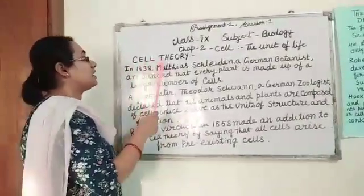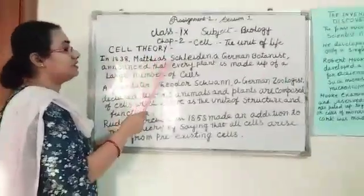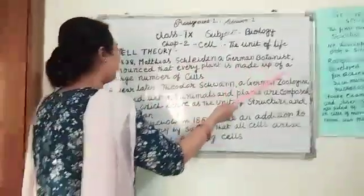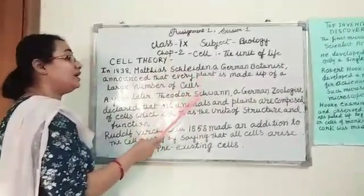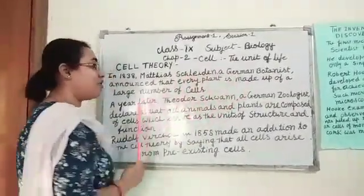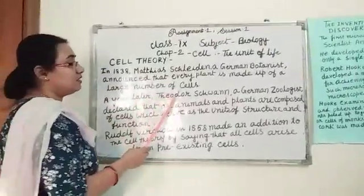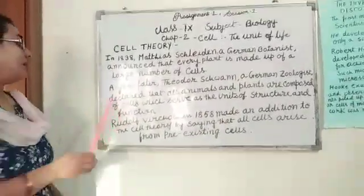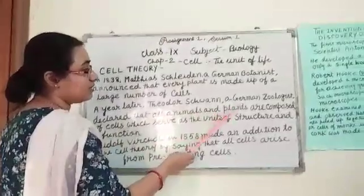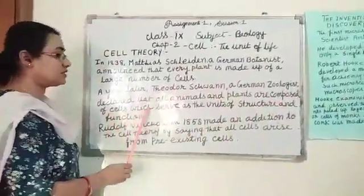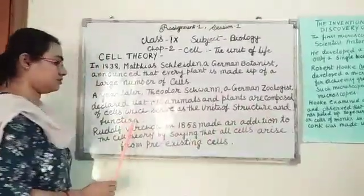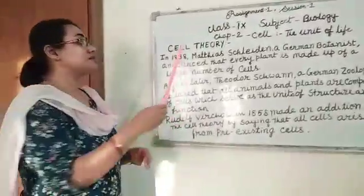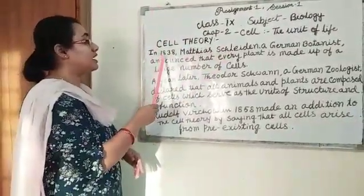Next topic: cell theory. In 1838, Matthias Schleiden, a German botanist, announced that every plant is made up of a large number of cells, and that each of these cells performed various life processes. A year later, Theodor Schwann, a German zoologist, made similar discoveries in animals. He declared that all animals and plants are composed of cells which serve as the units of structure and function. This, in short, is called the cell theory, proposed by Schwann and Schleiden in the year 1839.